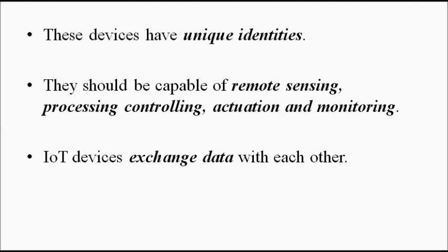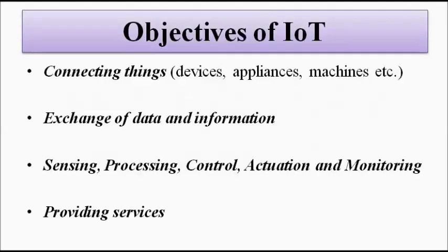The main objectives of IoT are: first, to connect all things with one another with the help of internet for the exchange of data and information — for sensing, actuation, processing, analyzing, control, monitoring — and to provide services depending on these operations. This is all about IoT, and we have already discussed these things in detail in the previous videos, so if you want you can watch those.